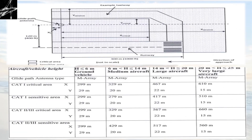Let's understand the table with which we understand the diagram. The first rule refers to the height of the vehicle or aircraft: height less than or equal to 6 meters for ground vehicles; height greater than 6 meters but less than or equal to 14 meters for medium aircraft; greater than 14 but less than or equal to 20 meters for large aircraft; and greater than 20 but less than or equal to 25 meters for very large aircraft.